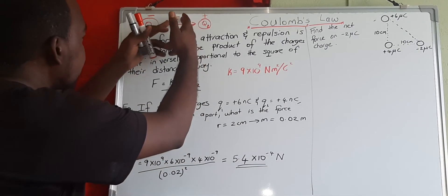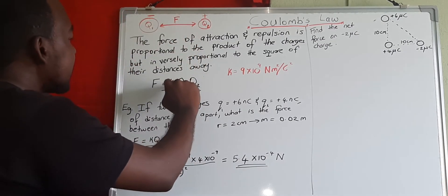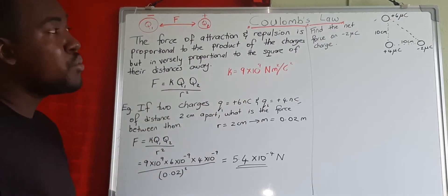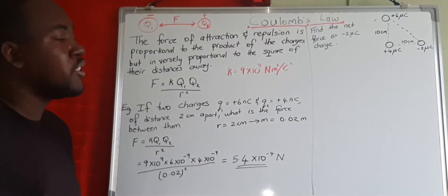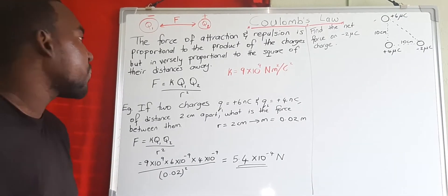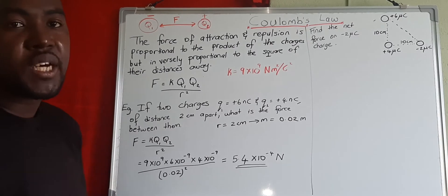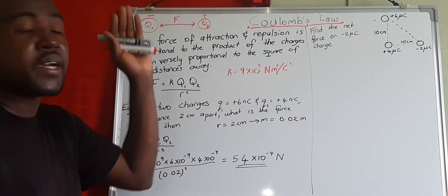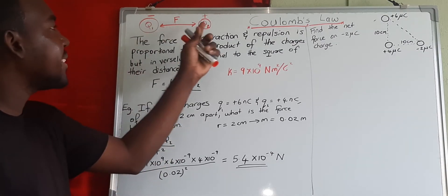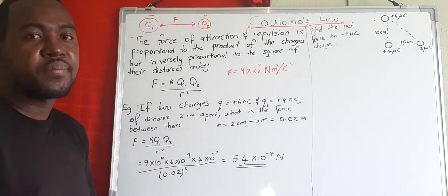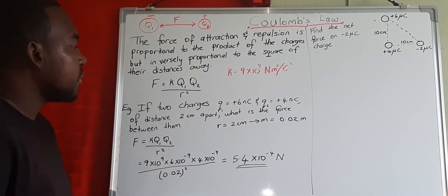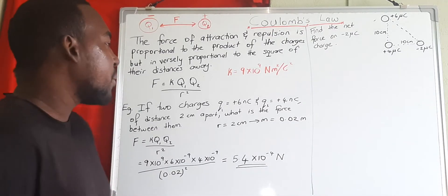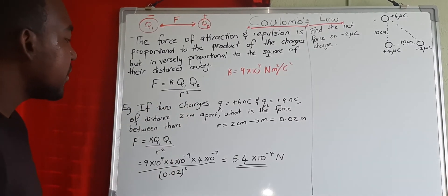The force F is equal to k times q1 times q2 divided by r squared. Here, k is Coulomb's constant, which is 9 times 10 to the 9 newton meter squared per coulomb squared. Q1 and Q2 are the values of the charges, and r is the distance between the charges. This is the equation we use to find the force in Coulomb's Law.